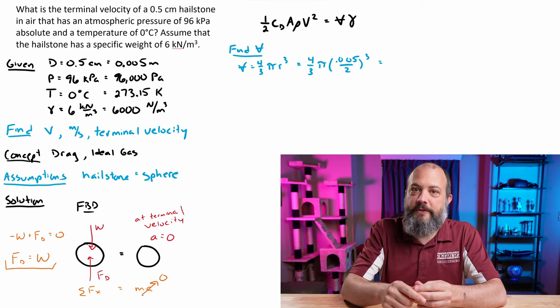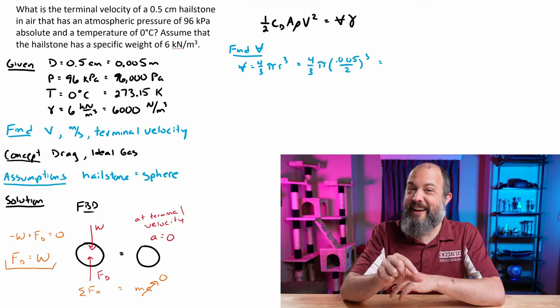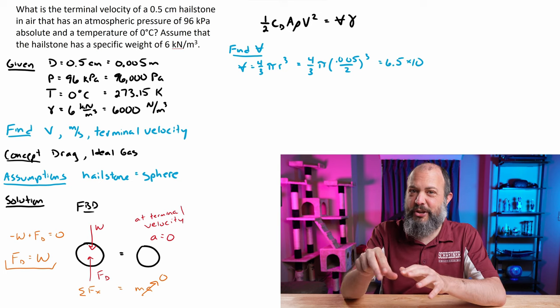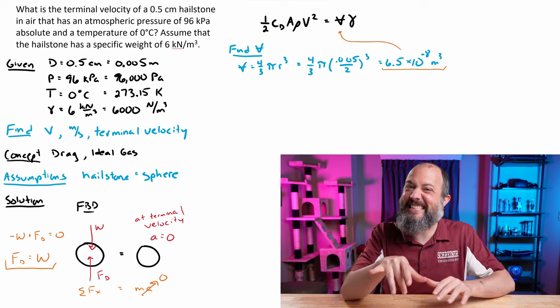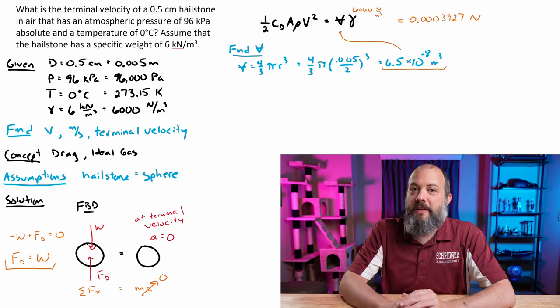That means the volume of a sphere, four thirds pi r cubed. So for a half centimeter size hailstone, this is like pea sized hail, 6.5 times 10 to the minus eight meters cubed.